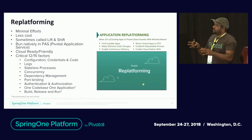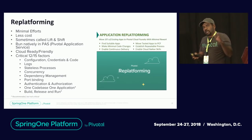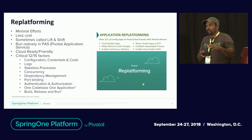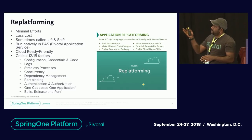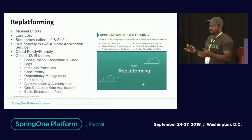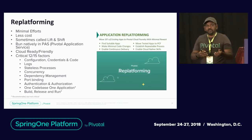In re-platforming, do you need all 15 factors? No. The critical factors you must have are: configuration, logging, stateless, concurrency, dependency management, port binding, and authentication/authorization. The other two are optional nice-to-haves. These are the minimum things to keep in mind when starting re-platforming an application.